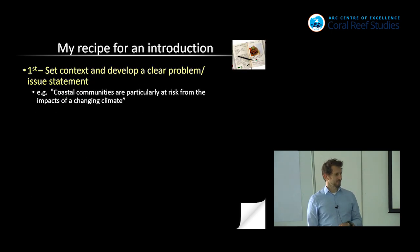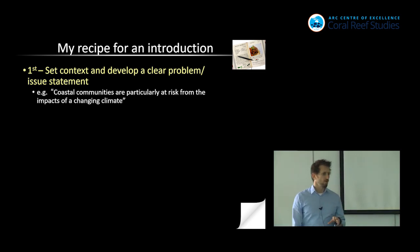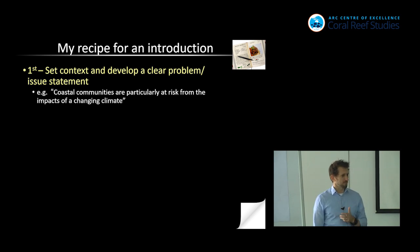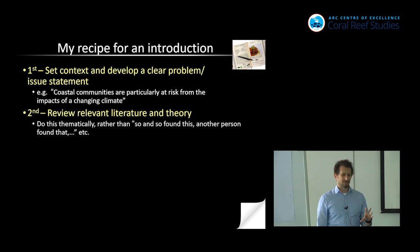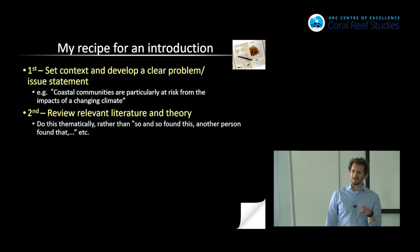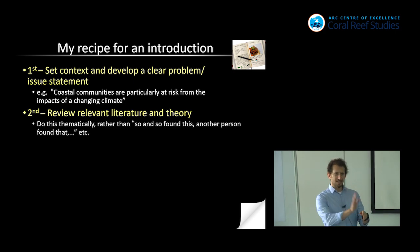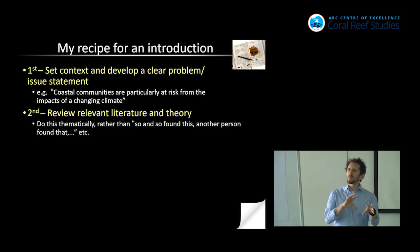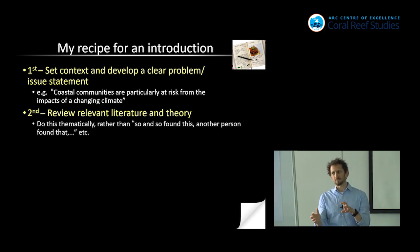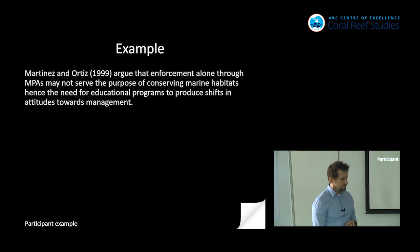My recipe for an introduction: first, set the context and develop a clear problem or issue statement — for example, 'coastal communities are particularly at risk from the impacts of changing climate.' Second, review the relevant literature and theory. I think it's really important to do this thematically rather than chronologically. I hate it when it's 'so and so found this, another person found that' — a lot of literature reviews are about each study and what it found, which is a terrible way to find a gap. Go back, write it down that way if you need to, then identify what these studies have in common to get broad themes.